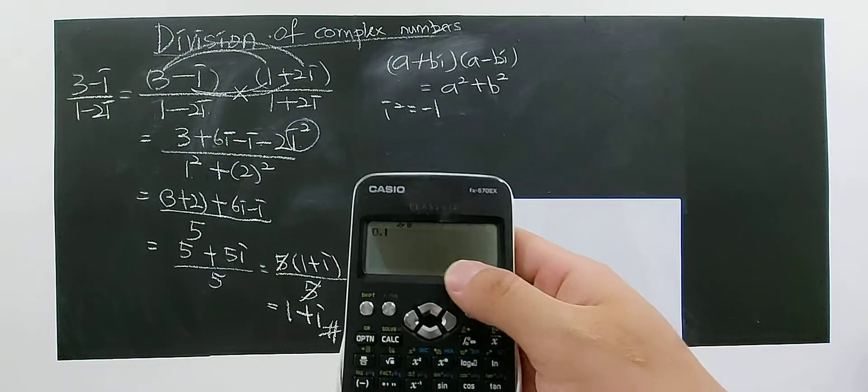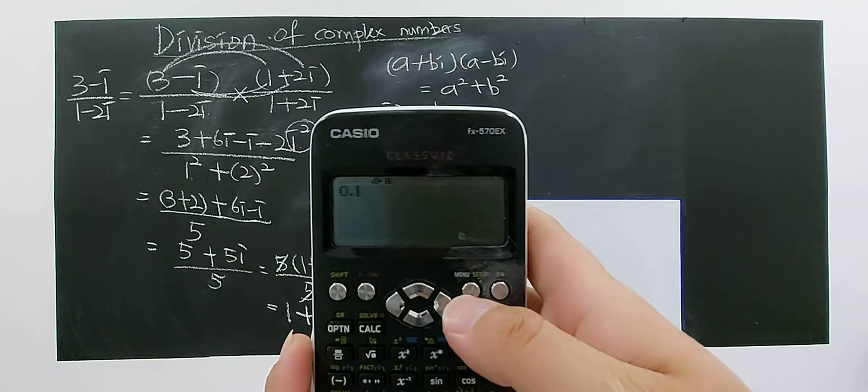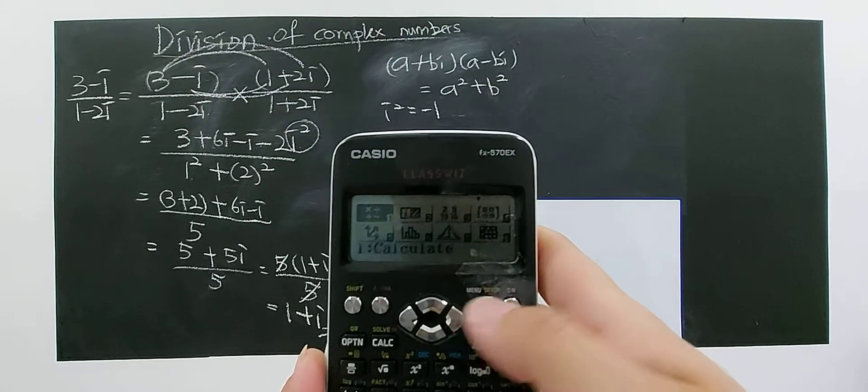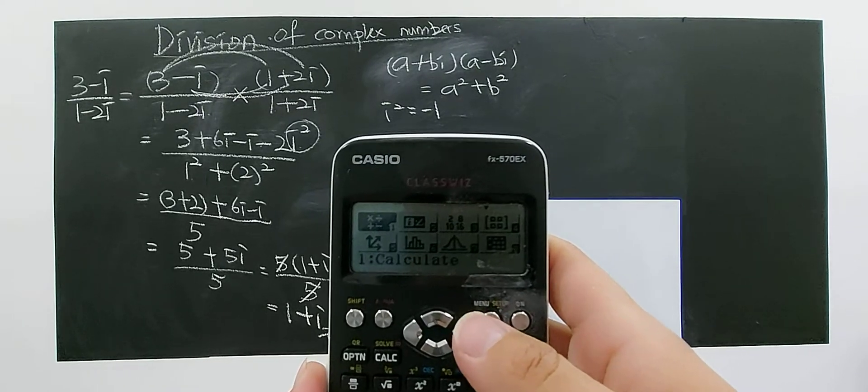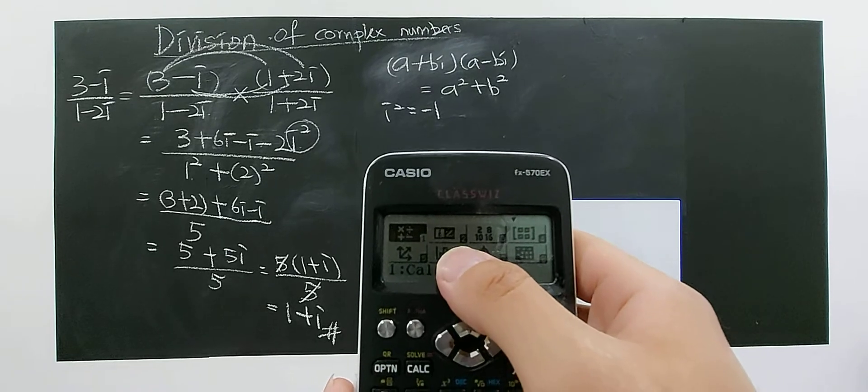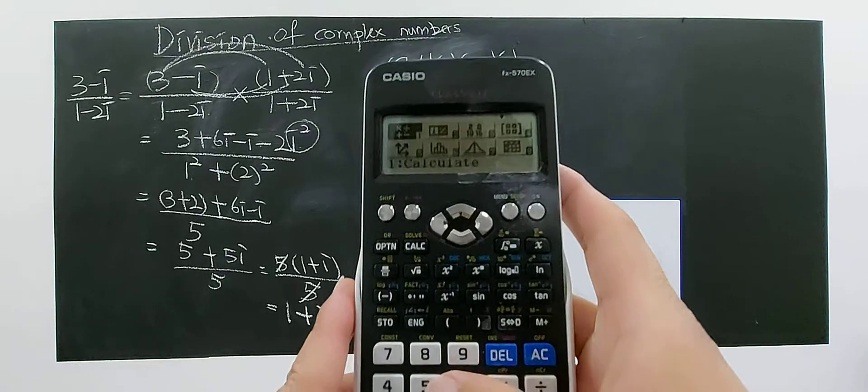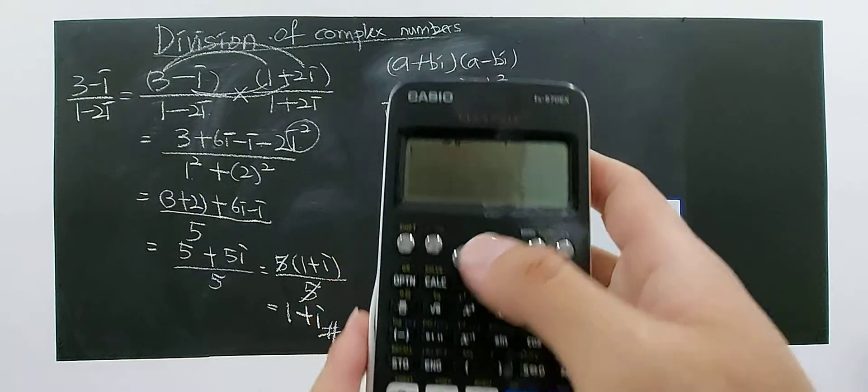This calculator is very good, so you can try to purchase one. You just by pressing the mode menu and choose 2, choose 2, then you will see i.